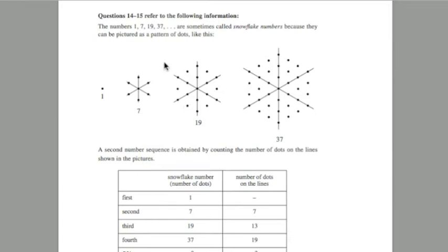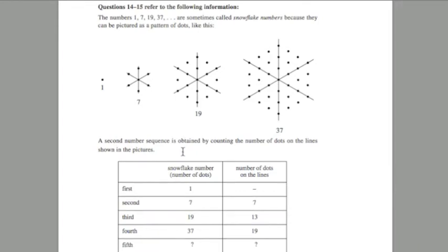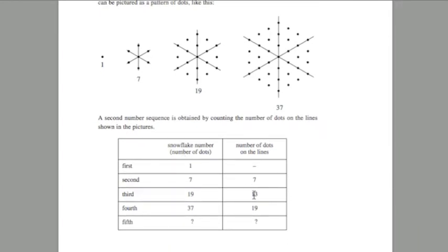Question 14 to 15. The numbers 1, 7, 19, 37 are sometimes called snowflake numbers because they can be pictured as a pattern of dots like this. So what they've done is you've been given information, and the second number sequence is obtained by counting the number of dots on the lines. So 7, 13, 19.